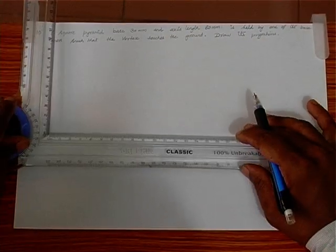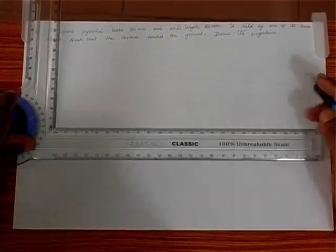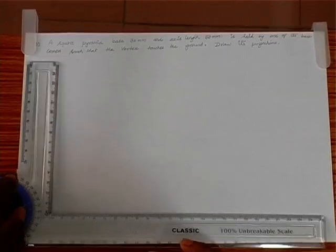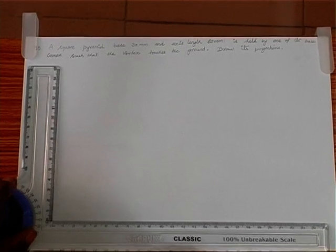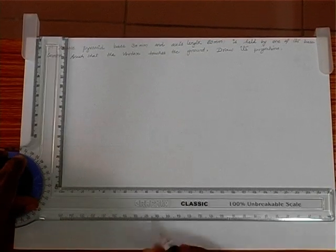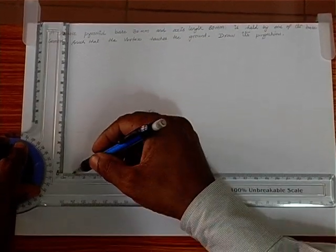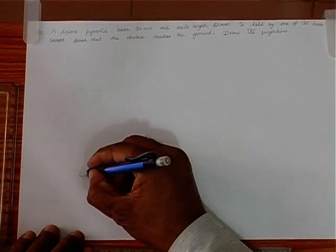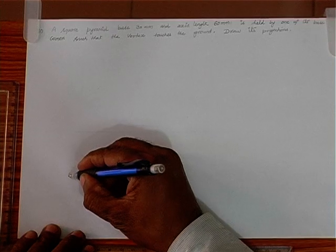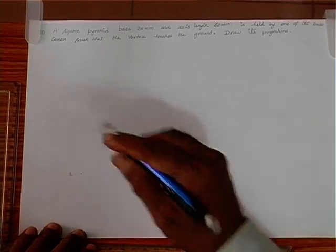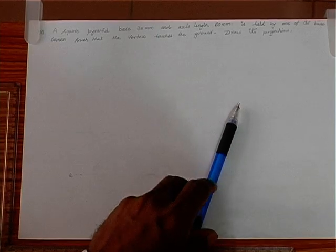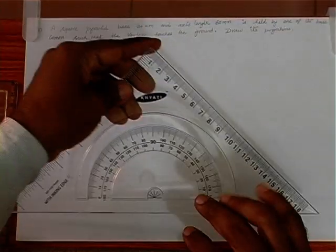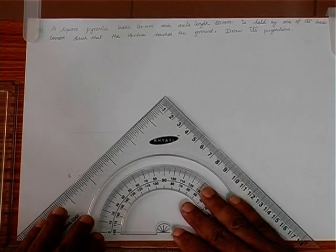So let's take our reference line. It's a square pyramid freely held by one of its corners. So let's take the square in corner position. The square in corner position has to be drawn in such a way that the line joining the corner and the center of the plane has to be parallel to XY. So let's just draw one 45-degree line.